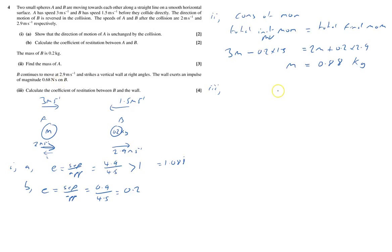B continues to move until it hits a vertical wall at right angles. So it's coming at 2.9 meters per second and bounces off there at V. And impulse going that way, impulse of 0.68.